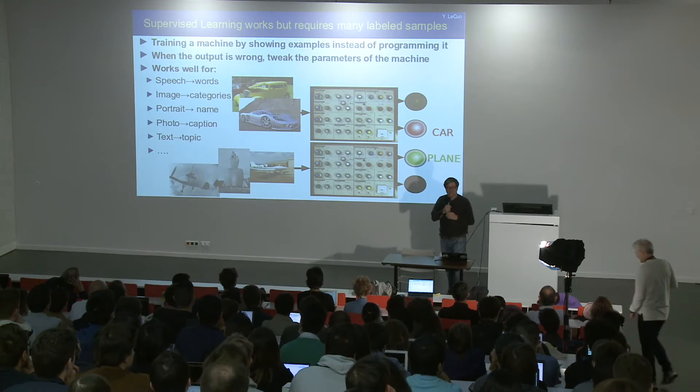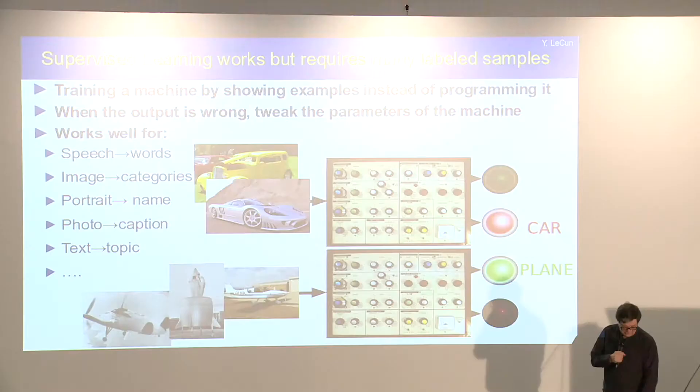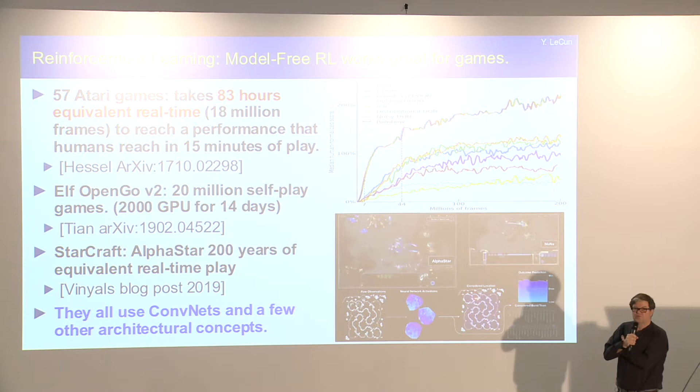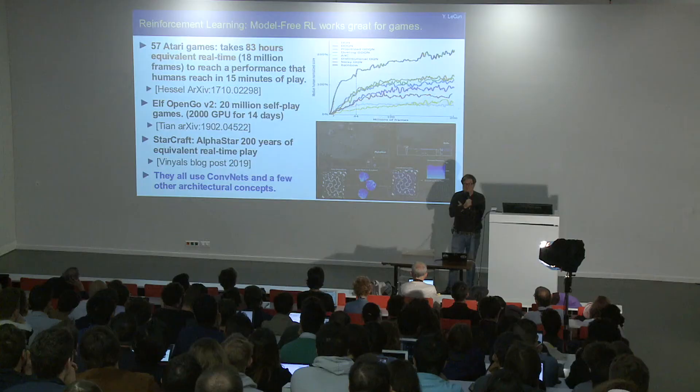There are guarantees of generalization if the capacity of the machine is limited. There is another form of learning I won't talk about much, called reinforcement learning, which has seen a lot of success over the last several years.